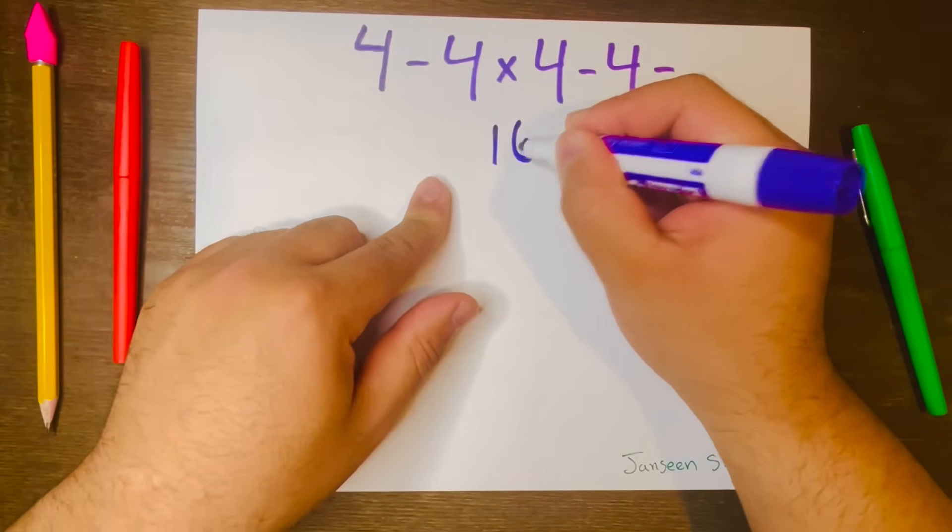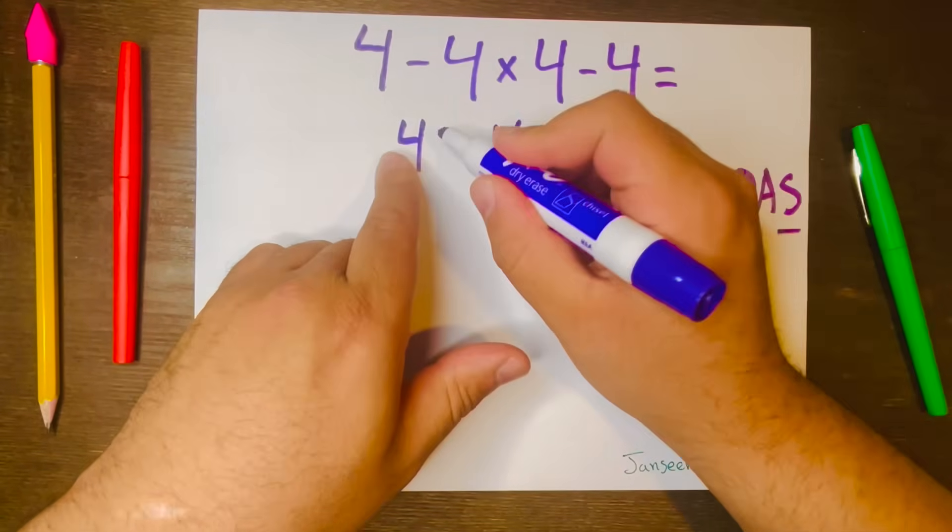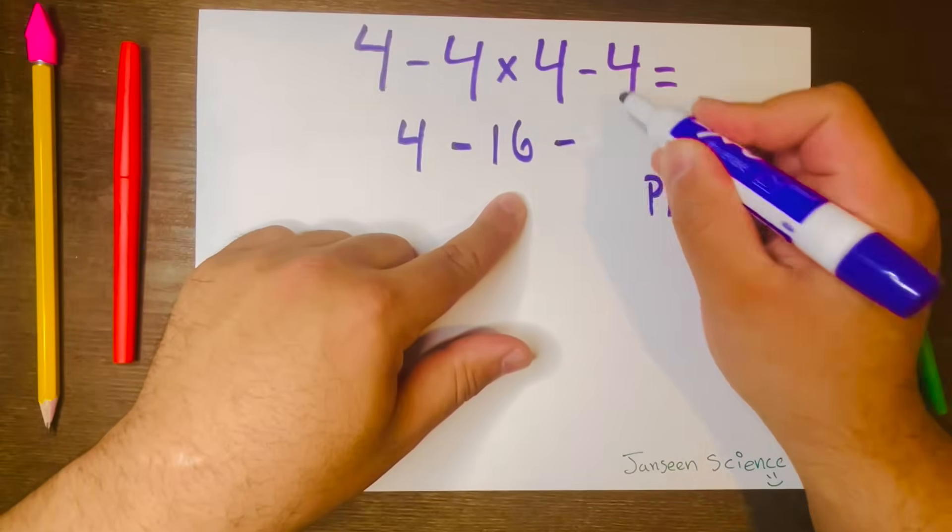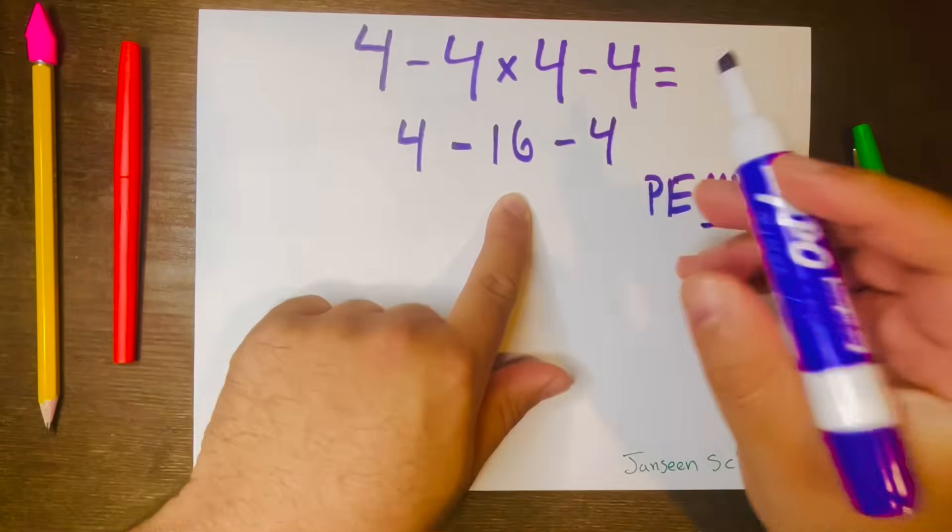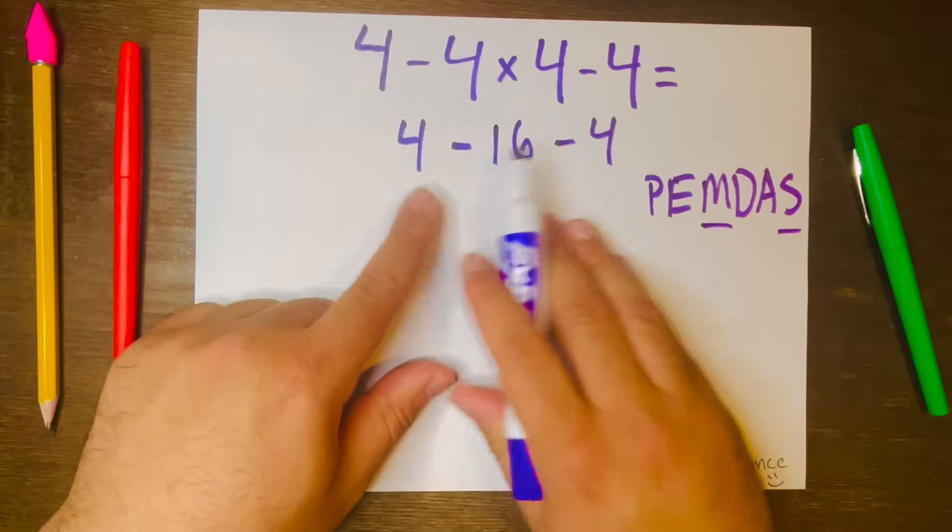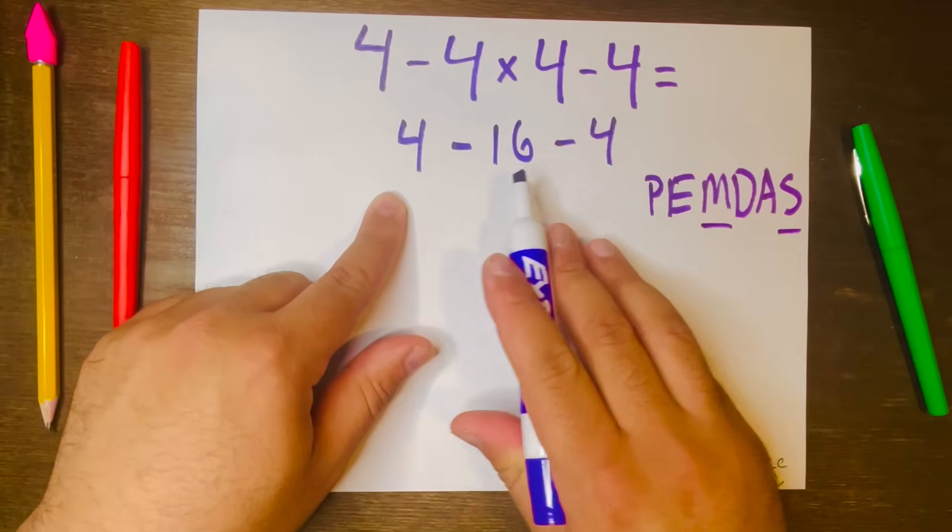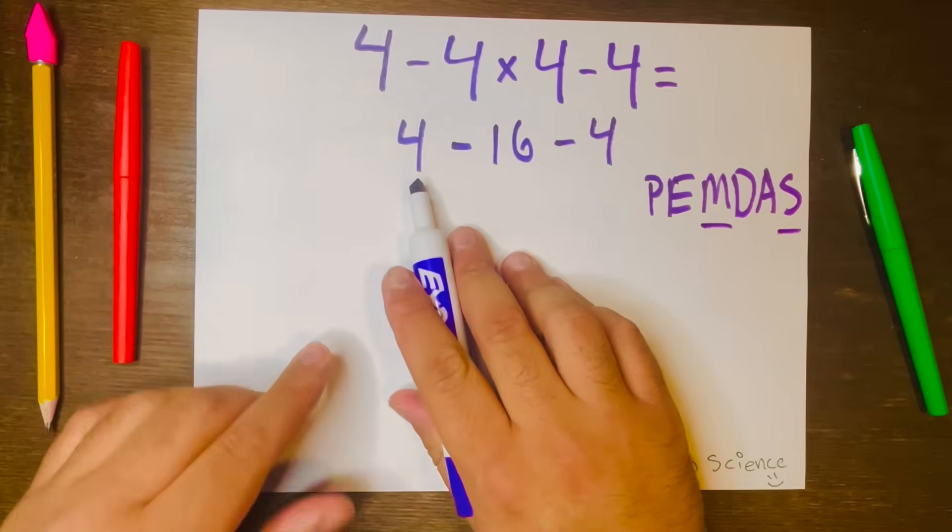And then we bring down the 4 minus 16—I mean 4 minus—and then the minus 4. And then we subtract. We work from left to right. We don't do 16 minus 4, we go 4 minus 16.